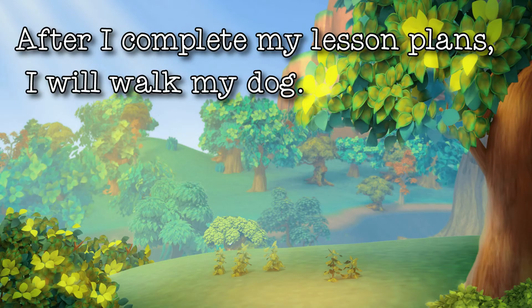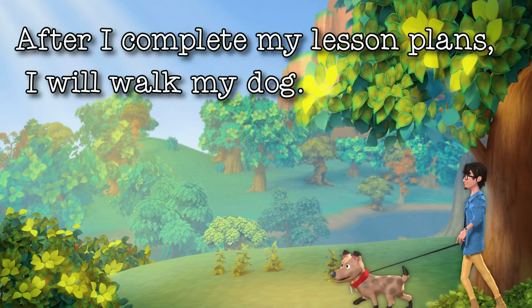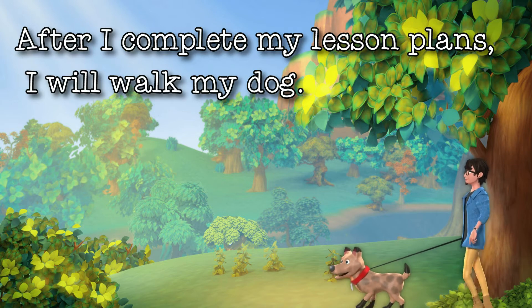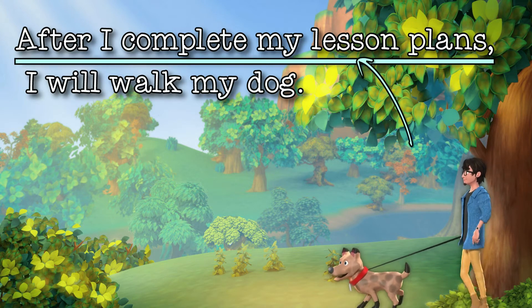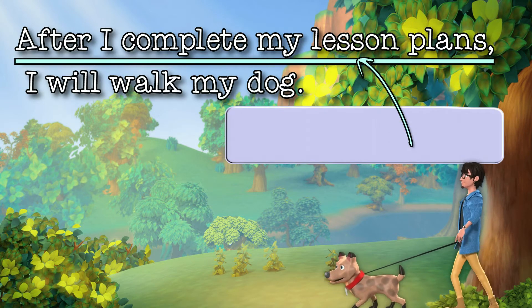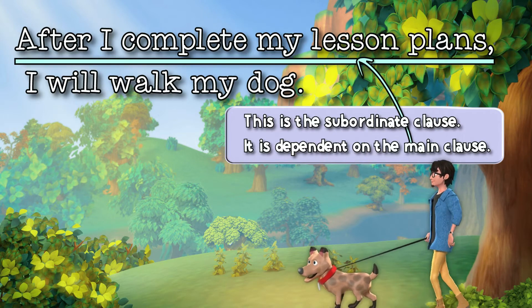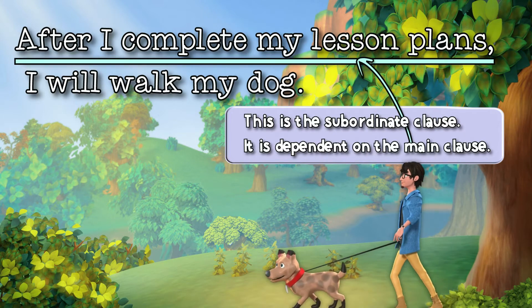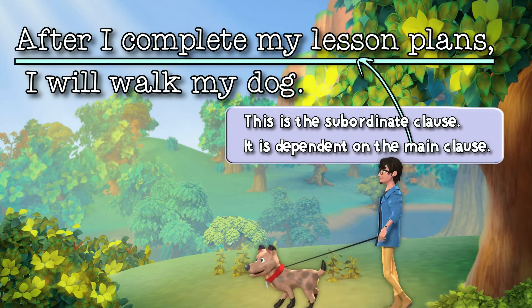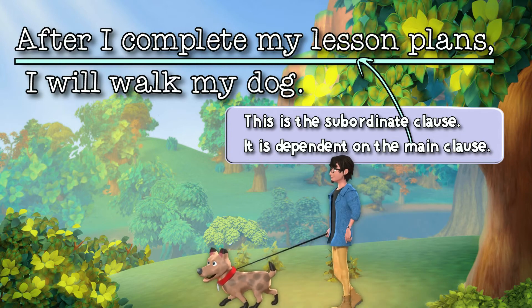This is a complex sentence using the subordinating conjunction 'after.' The subordinating clause is 'after I complete my lesson plans,' as this part of the sentence doesn't make sense on its own. It is dependent on the next part of the sentence to make sense: 'I will walk my dog.'